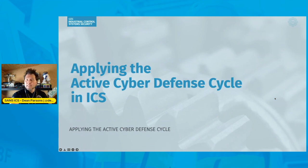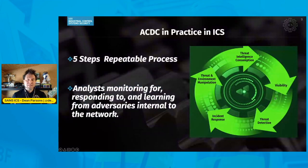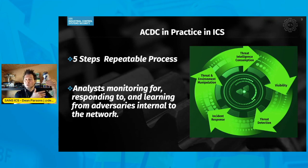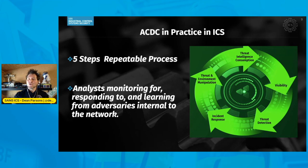The ACDC has five different steps, making it a repeatable process. Those steps are: threat intelligence consumption, visibility, threat detection, incident response, and threat environment manipulation. We're going to be using dedicated analysts who are monitoring for, responding to, and learning from adversaries and threats internal to the control network. But how do you apply these steps?